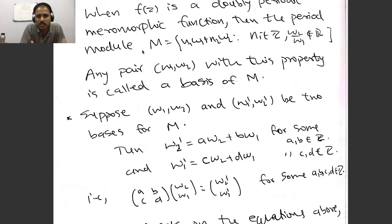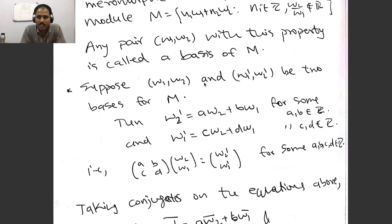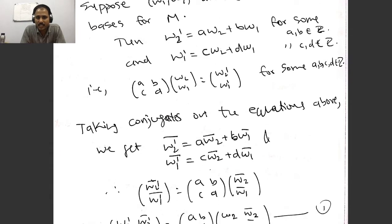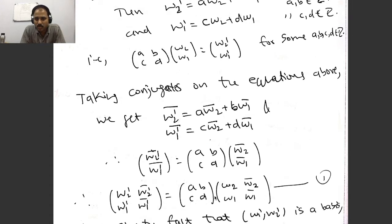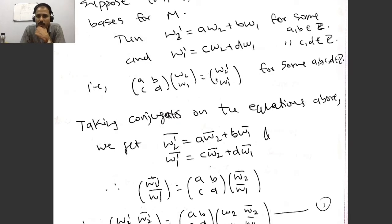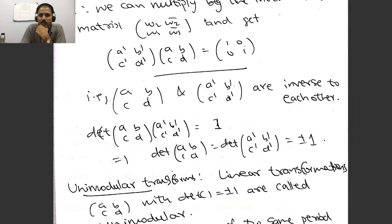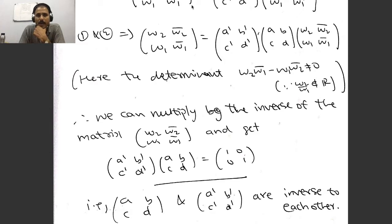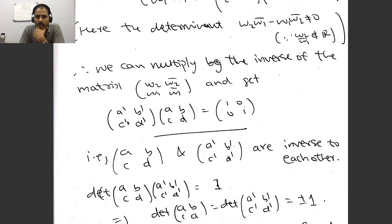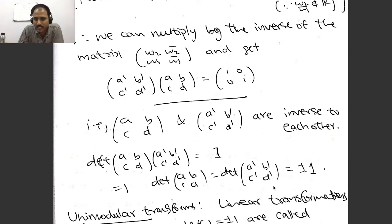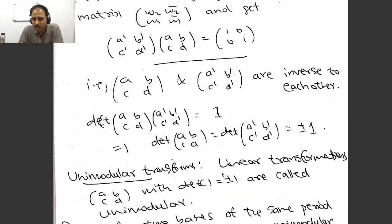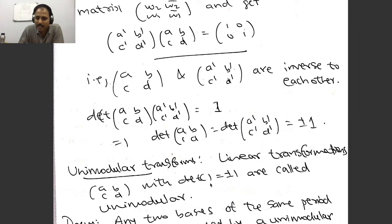We introduce the unimodular transformation, which takes one basis to another. If f is doubly periodic, M is of the third form and any pair (ω₁, ω₂) with this property is called a basis for M. If there are two bases, they are connected by a matrix (a b; c d) with integer entries. Applying the basis property for both pairs yields two matrices satisfying a product identity, implying each is the inverse of the other, so the determinant of (a b; c d) equals ±1. This is the unimodular transformation.